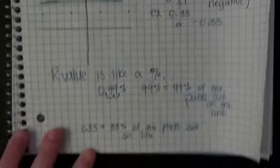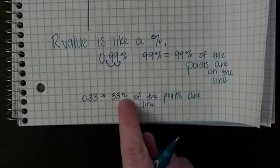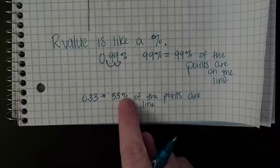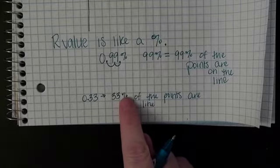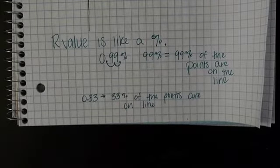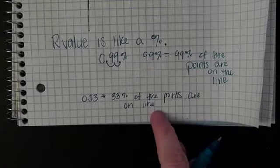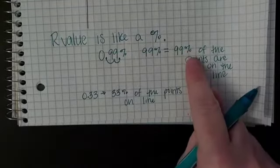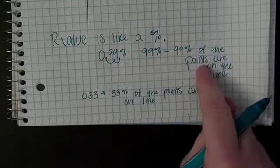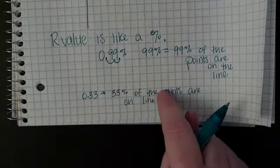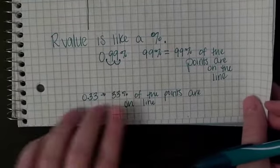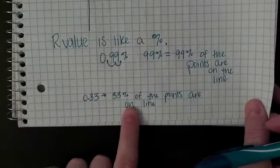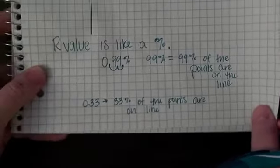If I had 0.33, that means only 33 percent of the points are on the line. Like if you got 33 percent on an assignment you only got one out of every three questions correct and you did not do well at all. So a 99 percent means you did really well so the points are really close. 0.33, only one out of every three points are actually on the line.